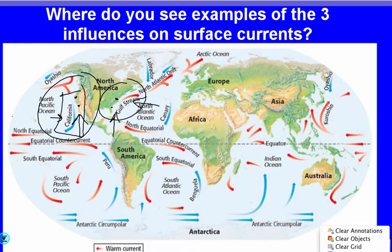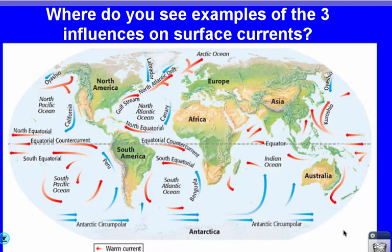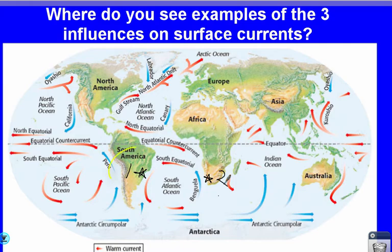Let's look at another example — comparing a location in South America and one in South Africa at similar distances from the equator. Where would you expect the climate to be warmer? Obviously, location one would be warmer because there is a warm current there, causing the air to be warmer, while there's a cold current at location two, causing colder air. So, warmer climate at one, cooler climate at two.